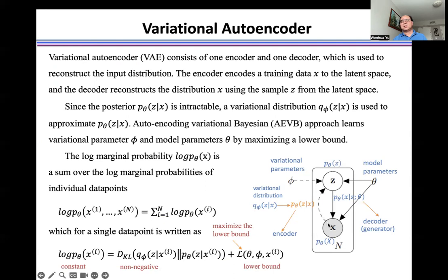The encoder encodes the training data set into the latent space, while the decoder reconstructs the input distribution by using latent variables z sampled from the latent space.